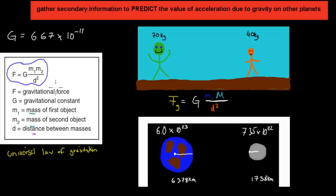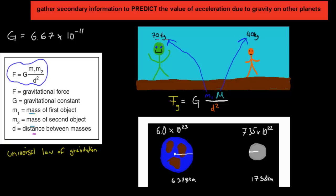So what we're going to talk about is what happens if we have two people and two planets in terms of their force of attraction. For example, let's say we have a person here who weighs 70 kg and a person here who weighs 40 kg. You might expect there to be no attraction at all between those two individuals, but there will actually be some attraction because of the formula. So mass 1 might be 70 kg, mass 2 might be 40 kg, and the distance between the two might be 2 meters.